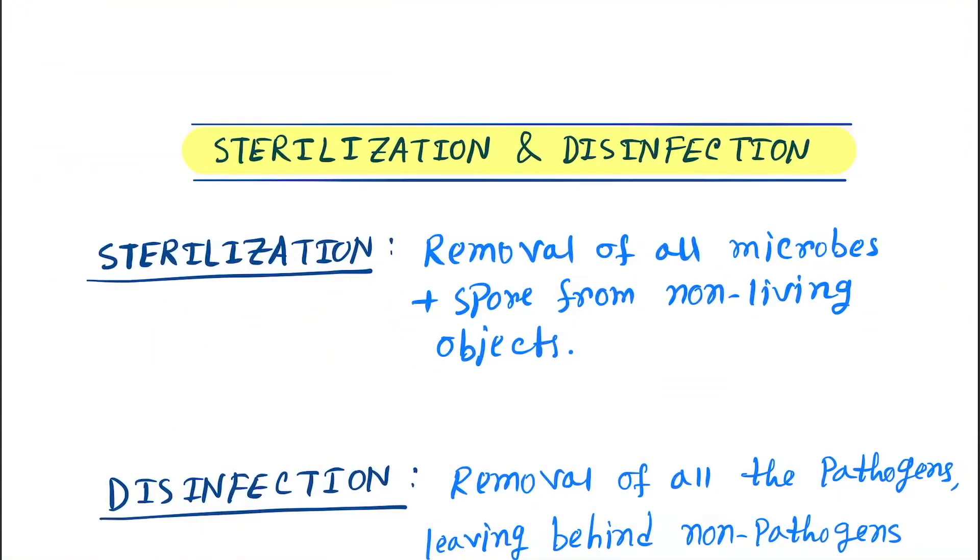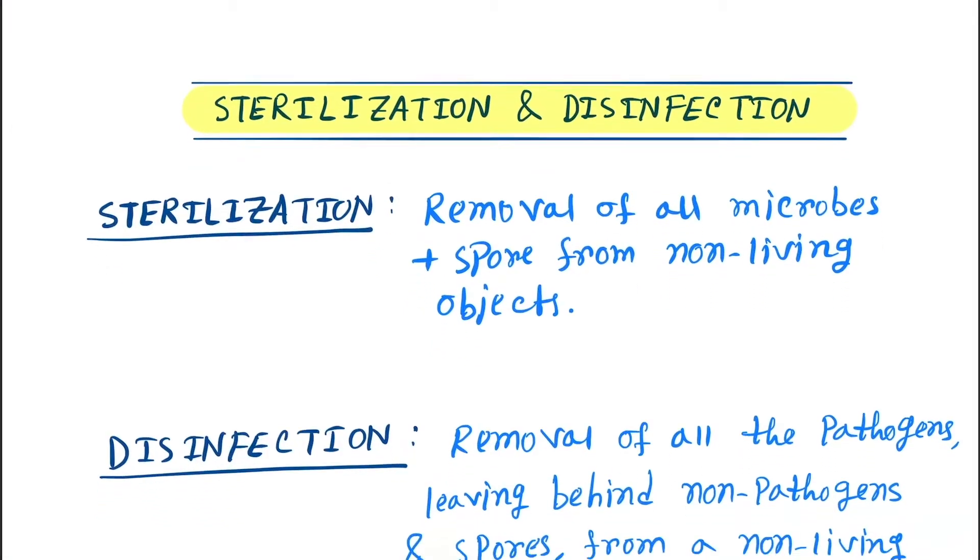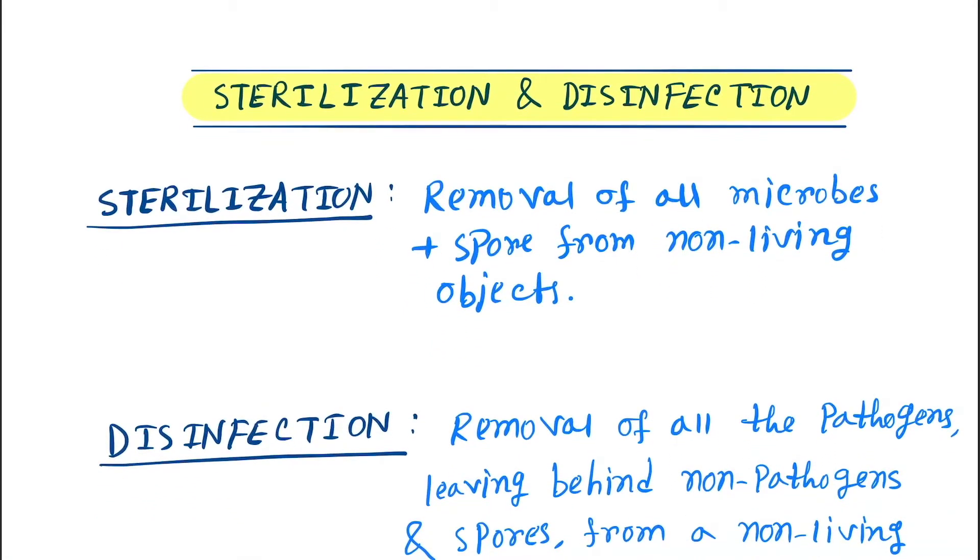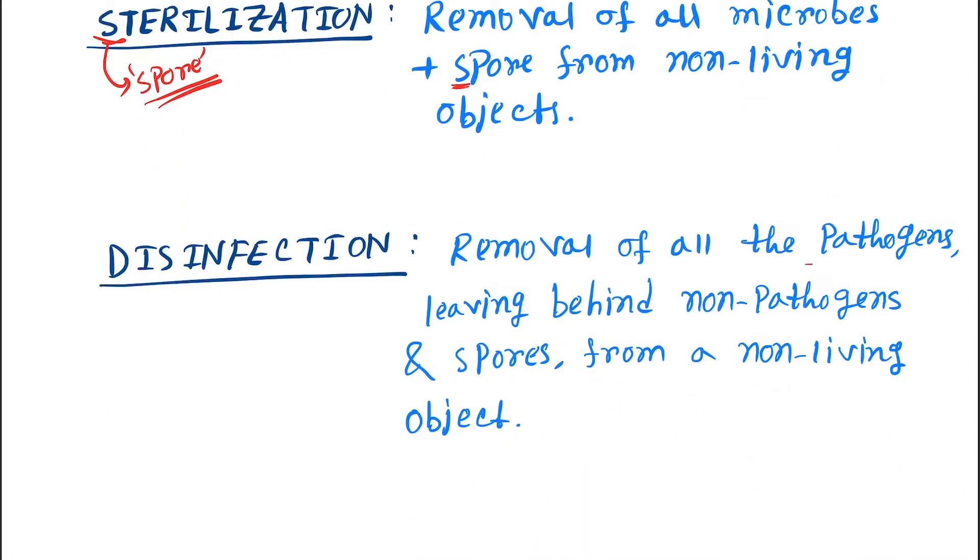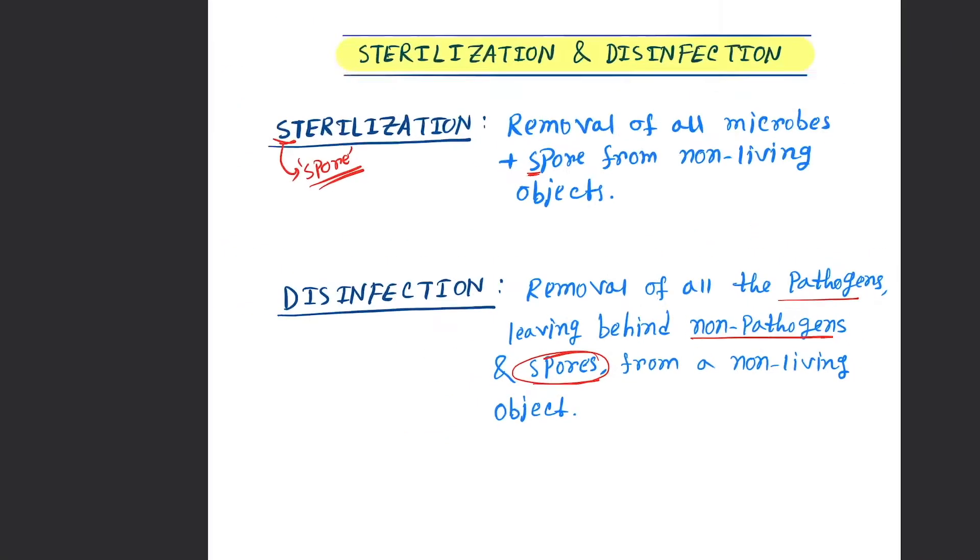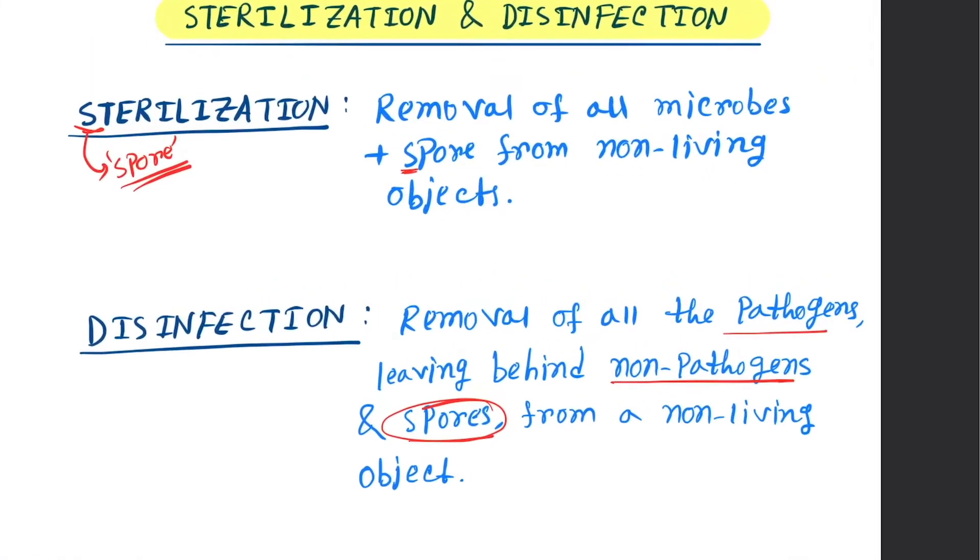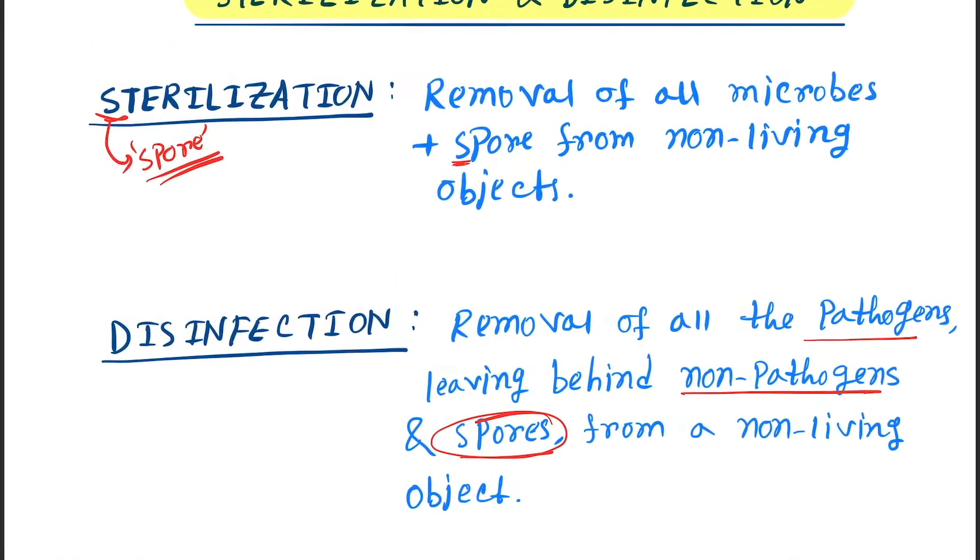Okay, so hello friends. Today our topic is sterilization and disinfection. What is sterilization? Sterilization is removal of all microbes plus spores. You have to remember it also includes the spore. Disinfection is removal of all the pathogens, leaving behind the non-pathogens and spores. That is, they do not kill the spores from a non-living object. So this is the definition of sterilization and disinfection.